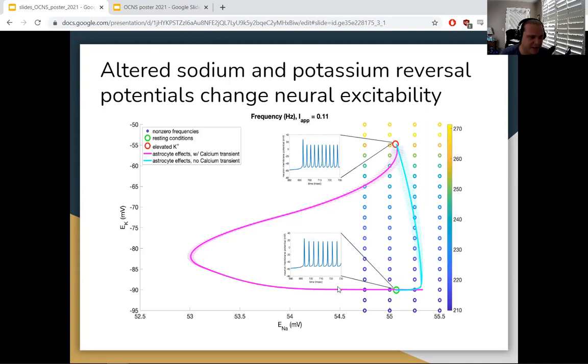With the calcium transient in pink, the astrocyte effects are taken down this modulatory pathway. And the neuron might not fire at all if it's stimulated at a particular time in this pathway at which the sodium reversal is pretty low.